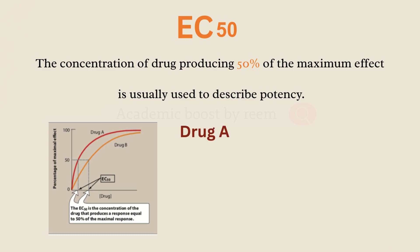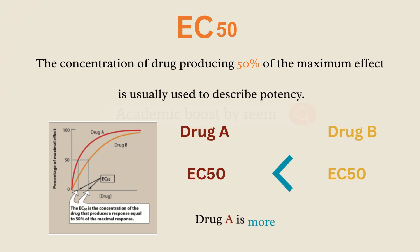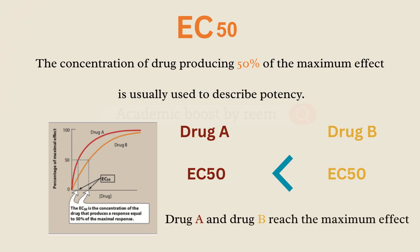Now let's look at the graph. On the left side we have drug A shown in red and drug B shown in yellow. Both drugs eventually reach the 100 percent effect, also known as Emax. But if we look at the point where the response is 50 percent of the maximum and trace it to the x-axis, we can determine the EC50 for each drug. Drug A has a lower EC50 compared to drug B, meaning drug A is more potent than drug B, even though both can achieve the same maximum effect.